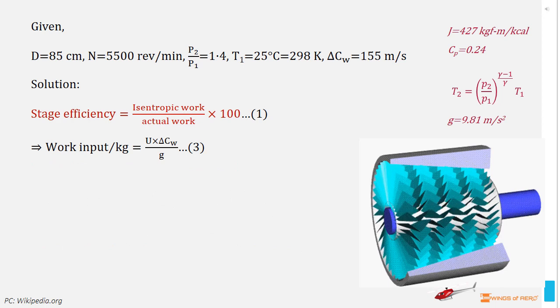Next, find work input per kilogram. So, work input depends on the blade speed and the compressor work. Then write, work input per kilogram is equal to U into delta C suffix W divided by G. Where, G is the acceleration due to gravity, which is 9.81 meter per second square. And delta C suffix W is the compressor work which is given and U is the mean blade speed.